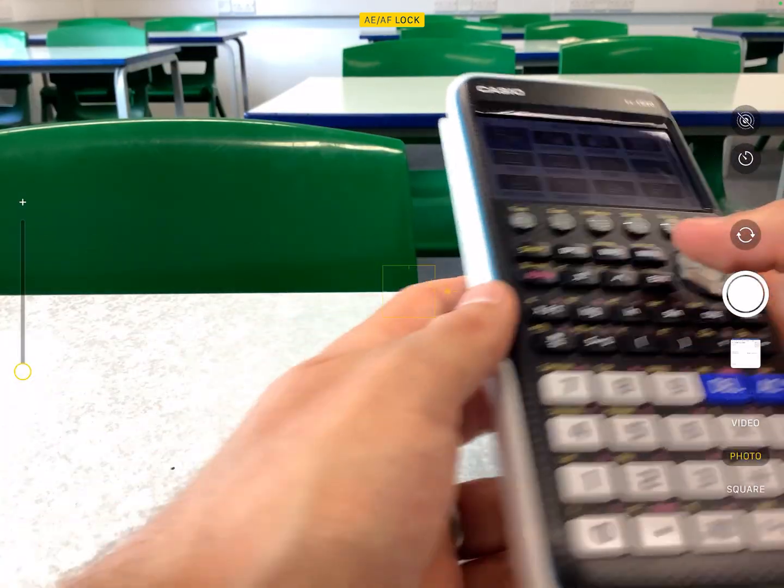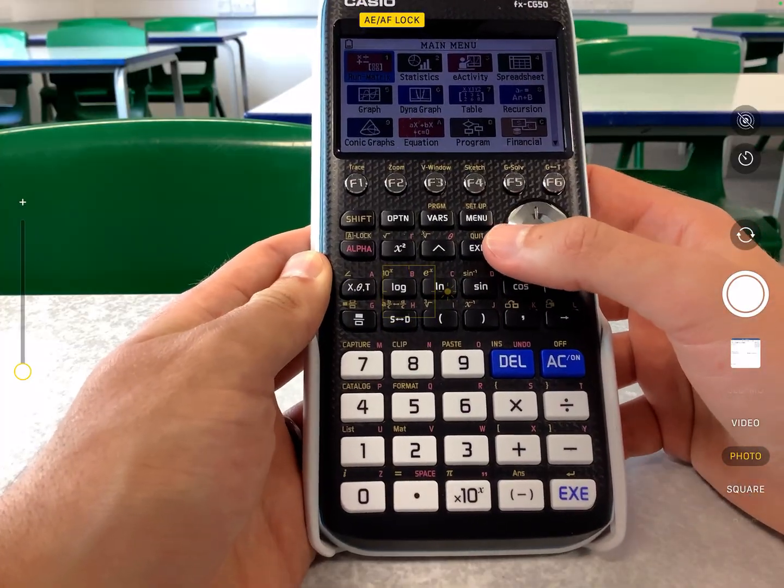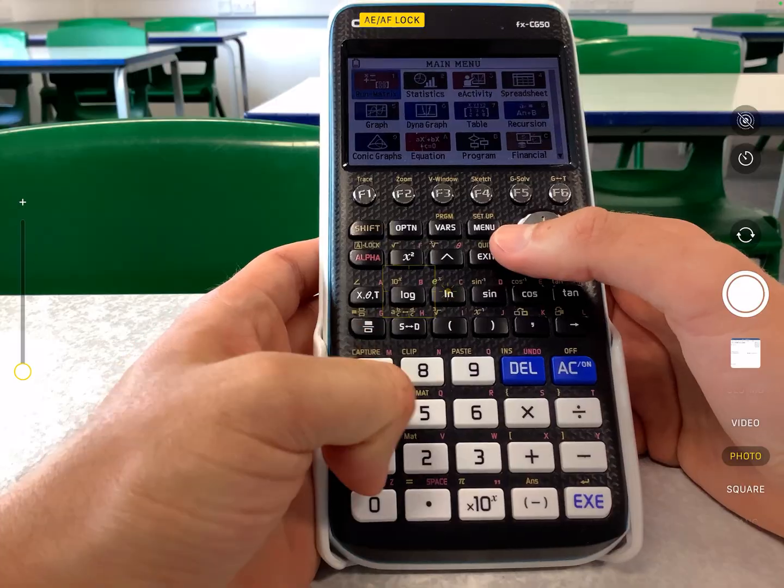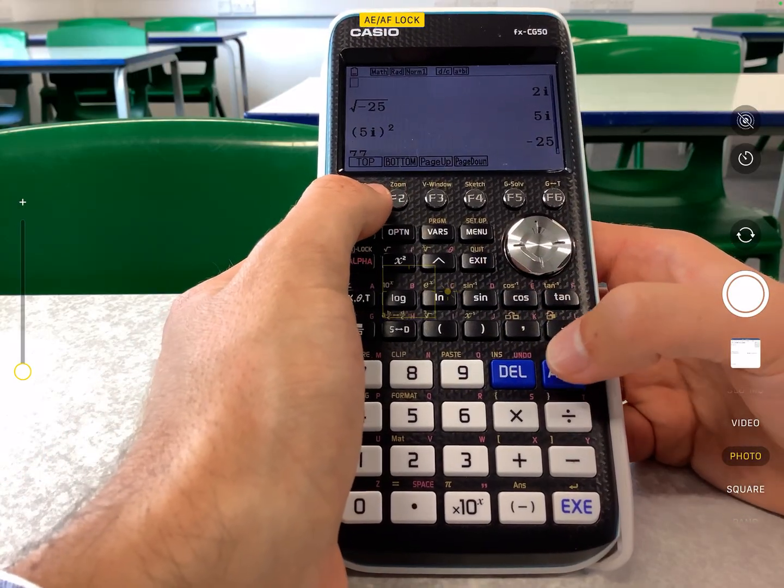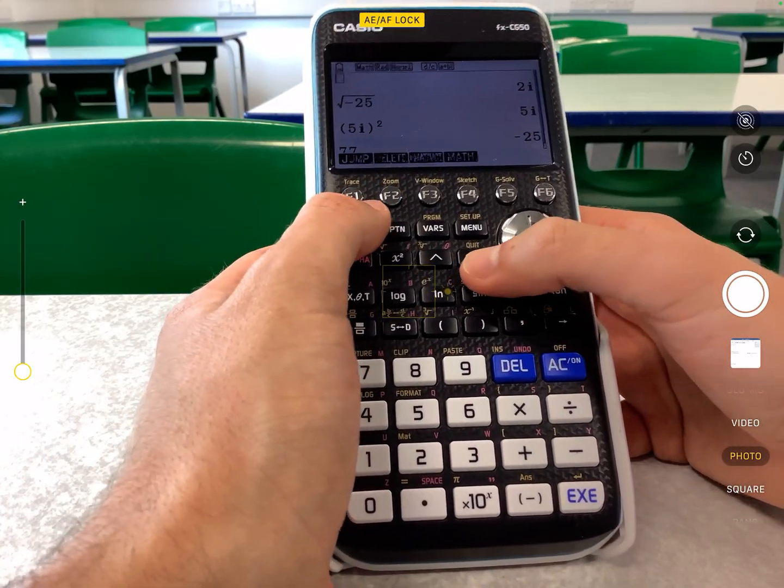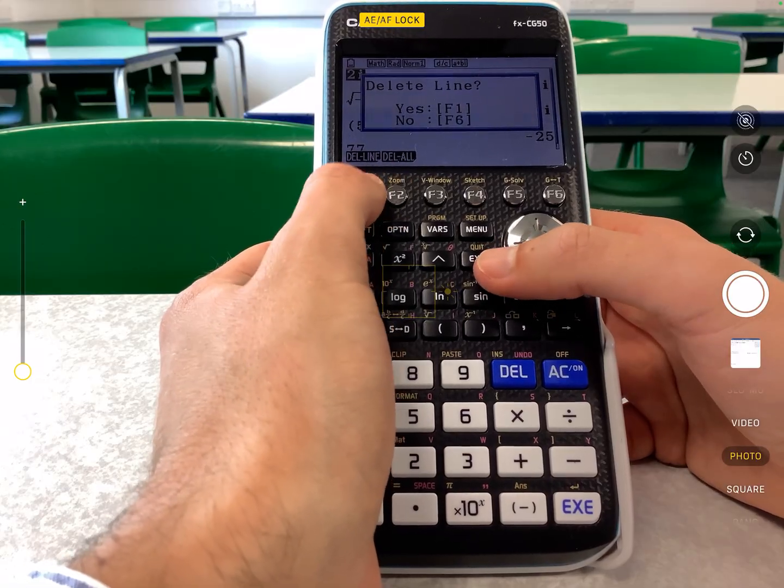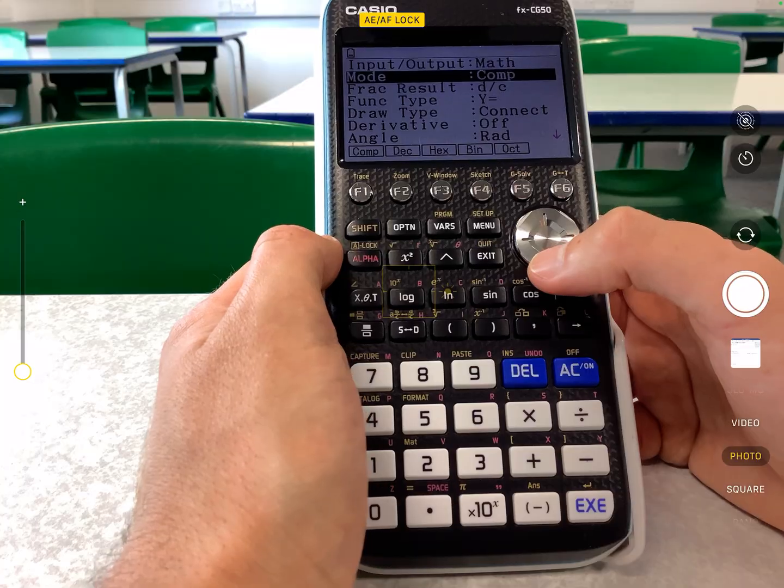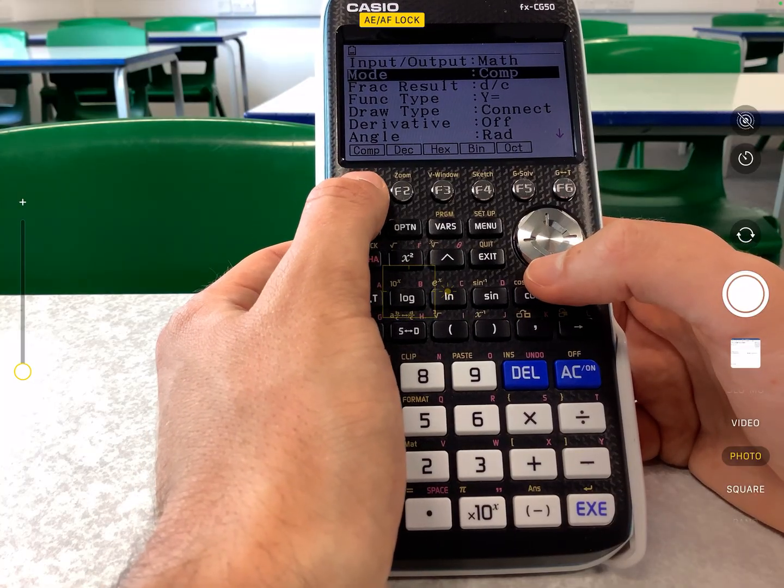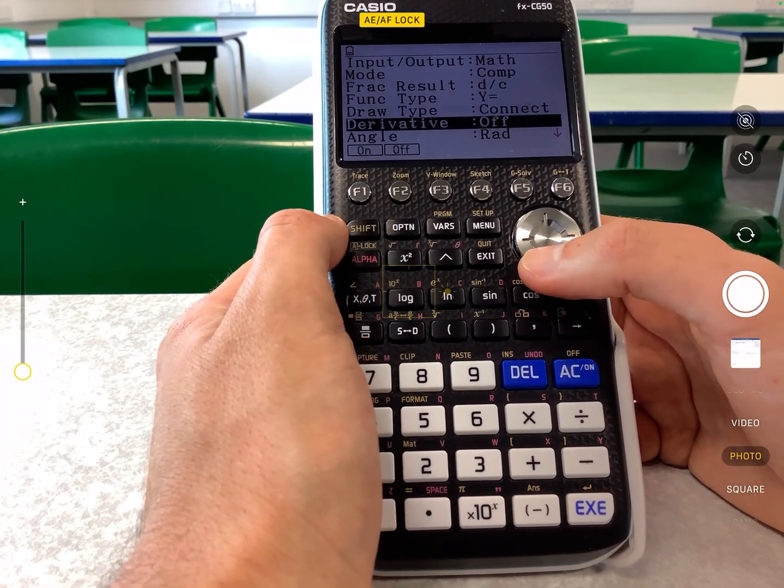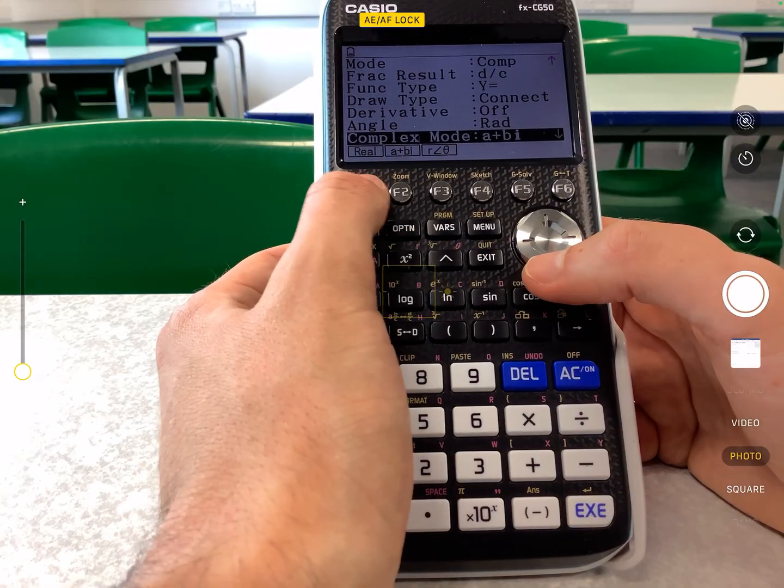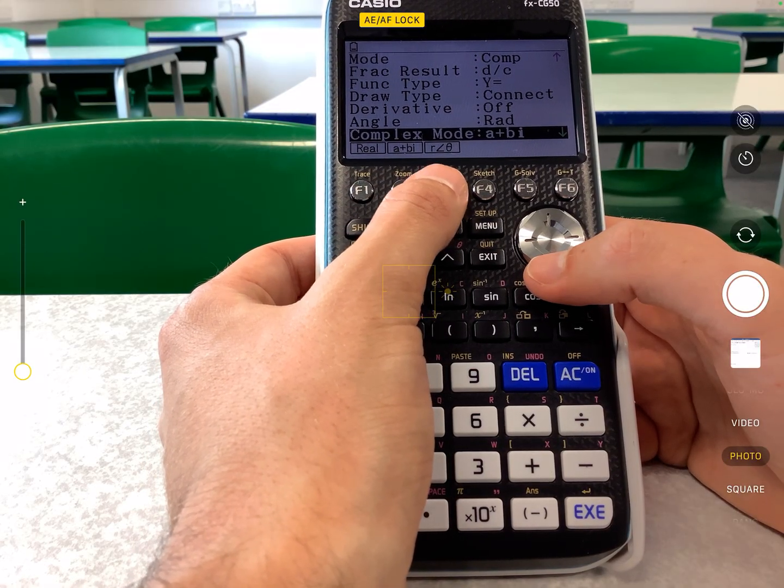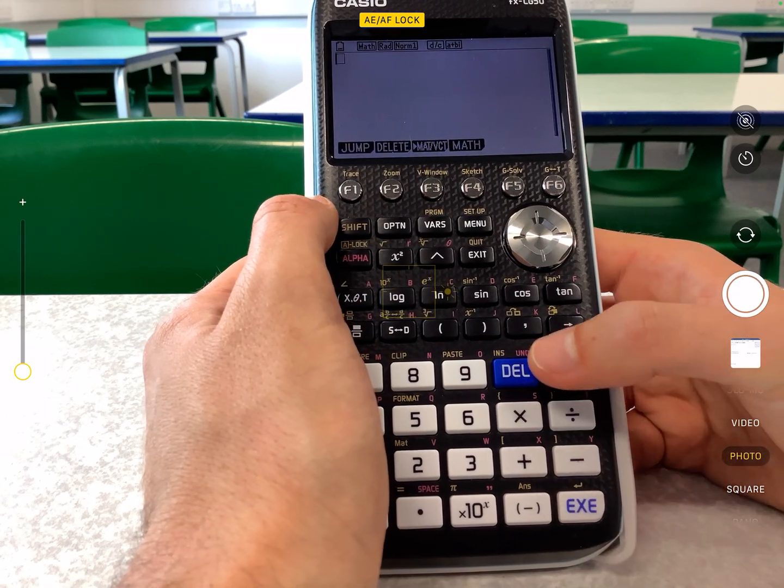So this is what it would be like for the graphics calculator. For the graphics calculator, you may need to go into the setup. So you go shift, setup. So you might need to go shift, setup. And then when it goes to mode, you just need to make sure that it's in complex mode like this, which is the first one. And also as you scroll down, the complex mode, the one that we want it to be is a plus bi. We don't want this r theta one. We might talk about that later. So just make sure it's in the a plus bi.